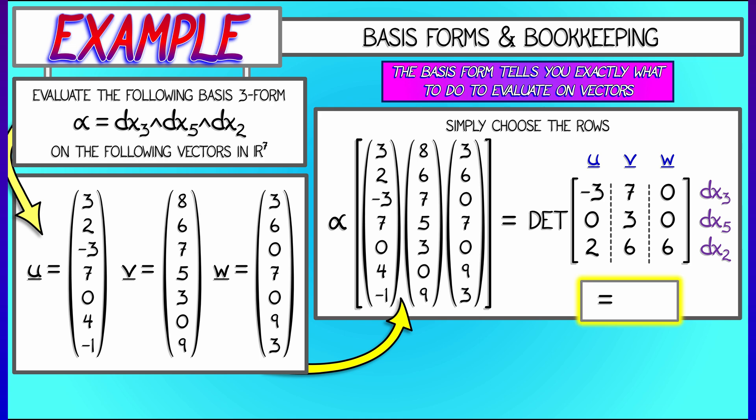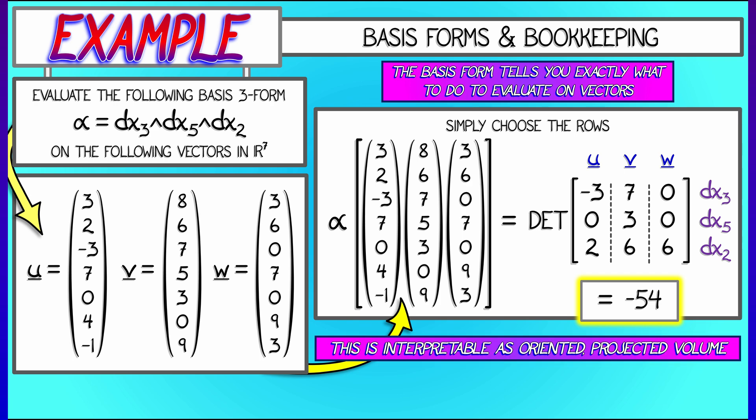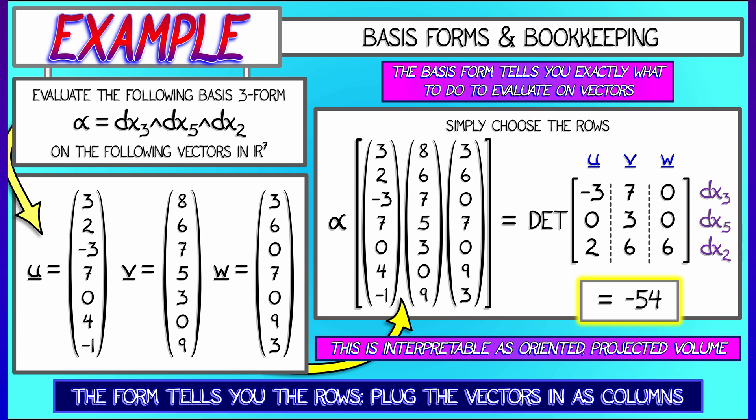Now, this is interpretable as oriented, projected, three-dimensional volume. We get that for free from determinants. This is such a wonderful thing. I'm so glad we learned determinants early on in our journey. Now, we can really put them to use to define general forms on R^n.